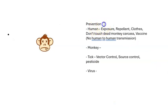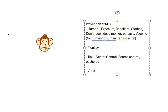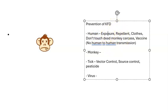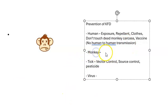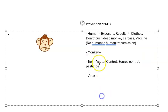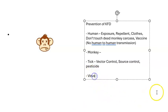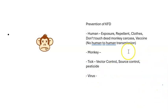Prevention of KFD: as a human, avoid exposure — be careful when going into the forest, use insect repellent, wear full-body clothing, and do not touch any dead monkey carcass. A vaccine is available. There is no human-to-human transmission. For vector control: use pesticides targeting ticks. General hygiene measures are also important.